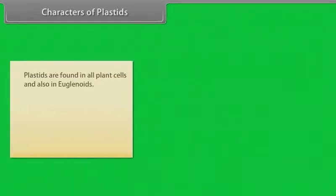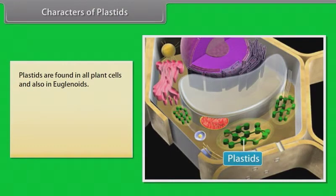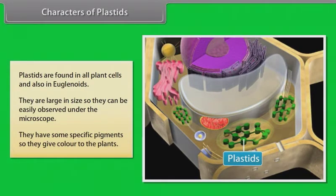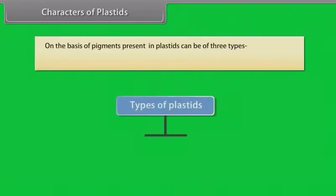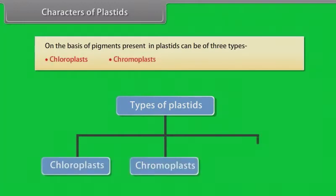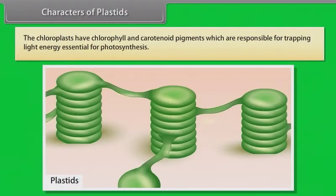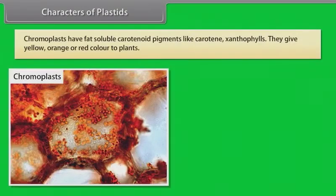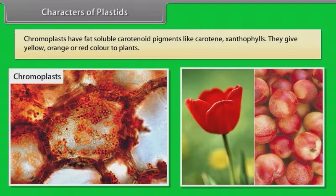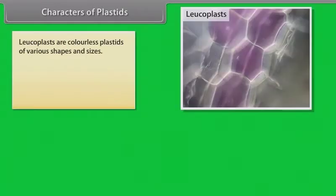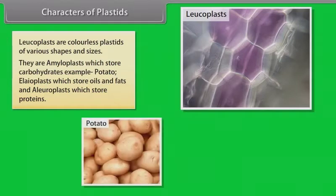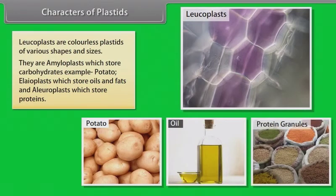Plastids are found in all plant cells and also in euglenoids. They are large in size, so they can be easily observed under the microscope. They have specific pigments, giving color to the plants. On the basis of pigments, plastids can be of three types: chloroplasts, chromoplasts, and leucoplasts. Chloroplasts have chlorophyll and carotenoid pigments responsible for trapping light energy essential for photosynthesis. Chromoplasts have fat-soluble carotenoid pigments like carotene and xanthophylls, giving yellow, orange, or red color to plants. Leucoplasts are colorless plastids of various shapes and sizes — amyloplasts store carbohydrates (e.g., potato), elaioplasts store oils and fats, and aleuroplasts store protein.